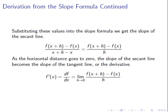So let's continue this. If we substitute these values into the slope formula, we get the slope of the secant line: f of x plus h minus f of x over x plus h minus x. On the denominator, the x plus h cancels with the x to give us h. And as the horizontal distance h goes to zero, the slope of the secant line becomes the slope of the tangent line, also called the derivative. The derivative is denoted by f prime of x equal df dx, equal to the limit as h approaches zero of f of x plus h minus f of x over h.